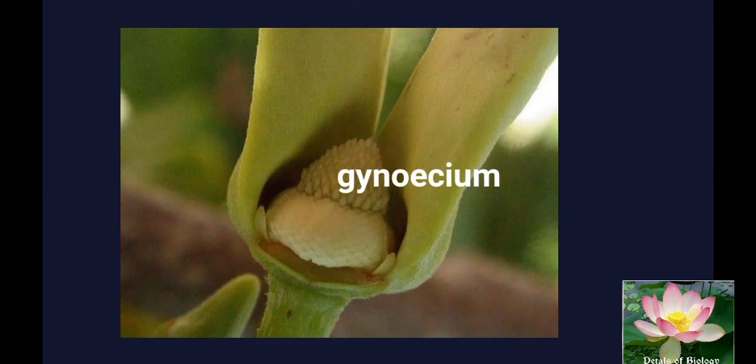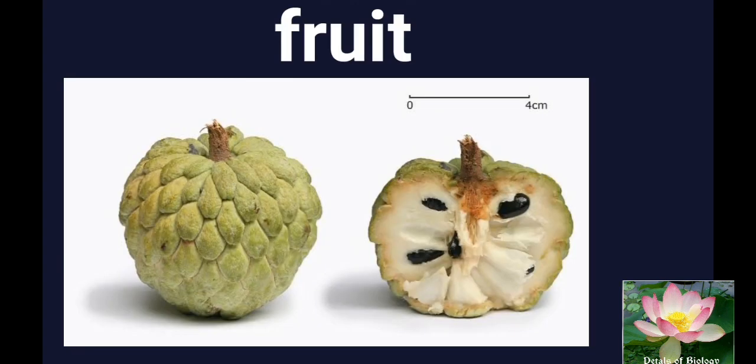The gynoecium has numerous closely arranged carpels. They are apocarpous. Each carpel is with a superior ovary, style and stigma. Placentation is marginal or basal. The fruit of this family is commonly an aggregate of berries.